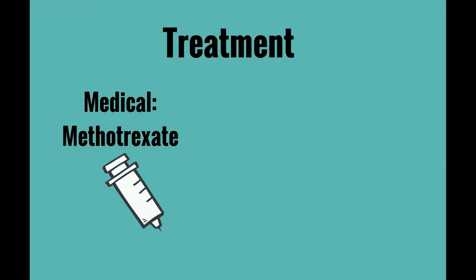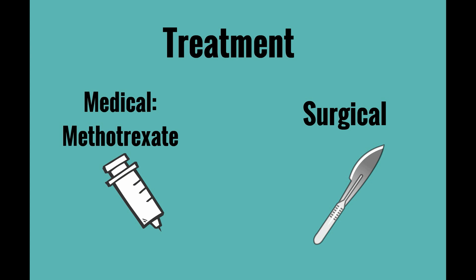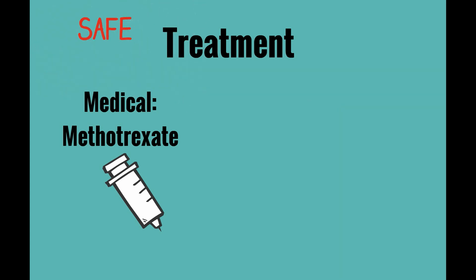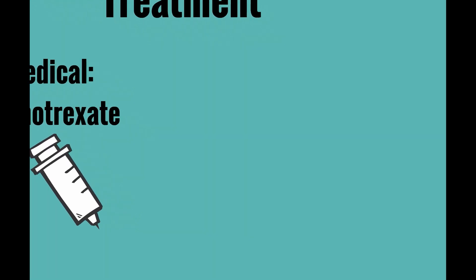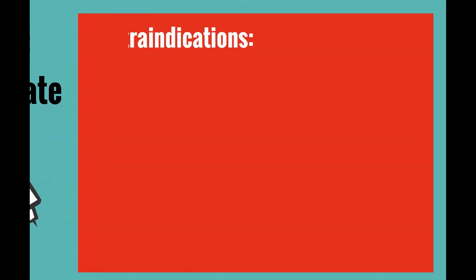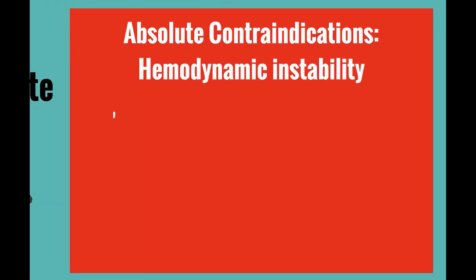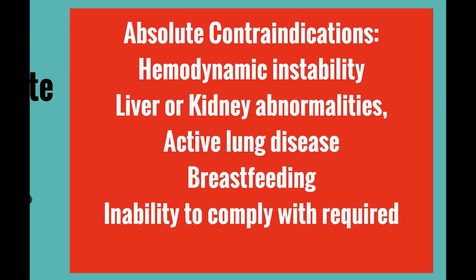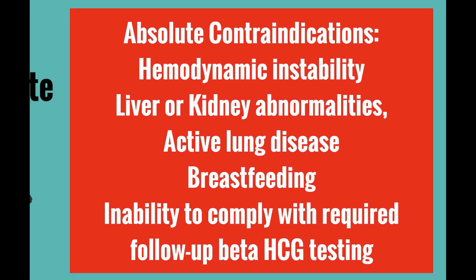Treatment for an ectopic pregnancy is either medical with methotrexate or surgical with either a salpingostomy or salpingectomy, usually performed laparoscopically. Medical management with methotrexate can be used if it is safe and there is a high chance for success. The absolute contraindications to methotrexate — addressing the safety issue — are hemodynamic instability, liver or kidney abnormalities, active lung disease, breastfeeding, and inability to comply with the required follow-up beta HCG testing.